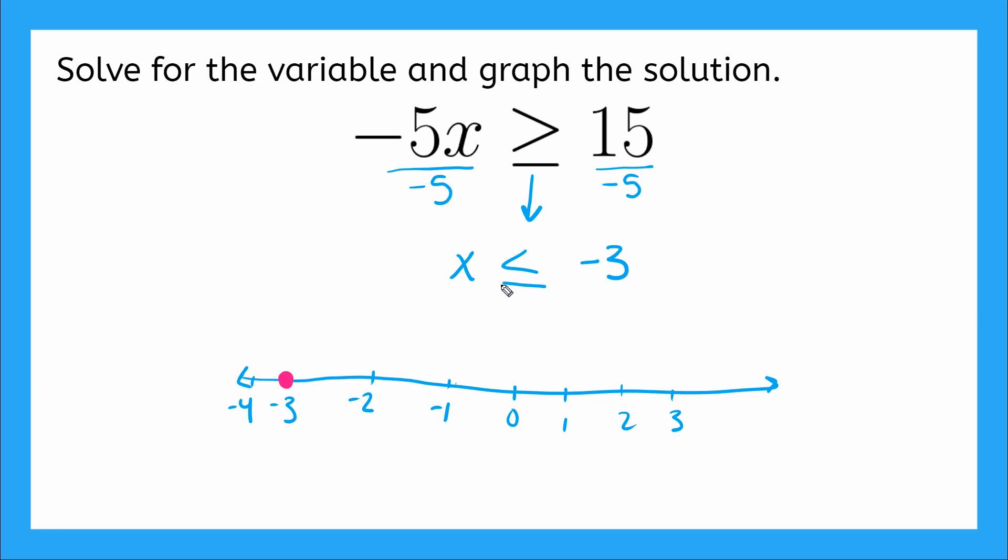And what direction does my arrow go? Well, x is less than or equal to. Remember, I flipped my sign. So my arrow is going to point to all the numbers that are less than negative 3. Amazing.